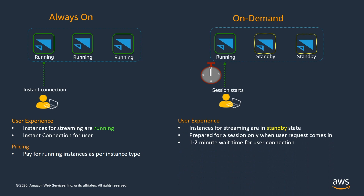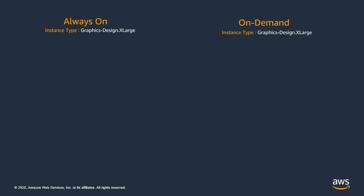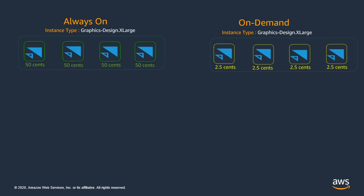When it comes to pricing, for always-on fleet, each running instance is charged at the regular hourly pricing based on the instance type. Whereas for on-demand fleet, since it may have both running and standby instances, the running instances are charged at the regular hourly pricing based on the instance type, whereas the standby instances are charged at a minimal fee of 2.5 cents per hour regardless of the instance type.